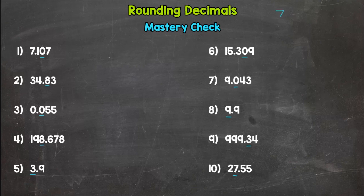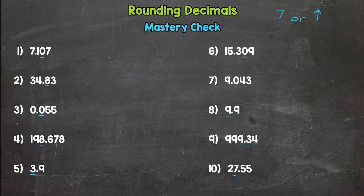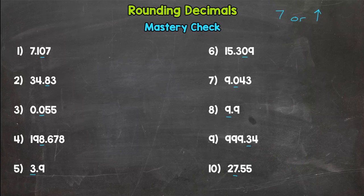Your goal is to have seven or up correct. So seven, eight, nine, or ten correct out of ten, and that will show you have mastered rounding decimals. Okay, so when you're ready to go, go ahead and press pause.